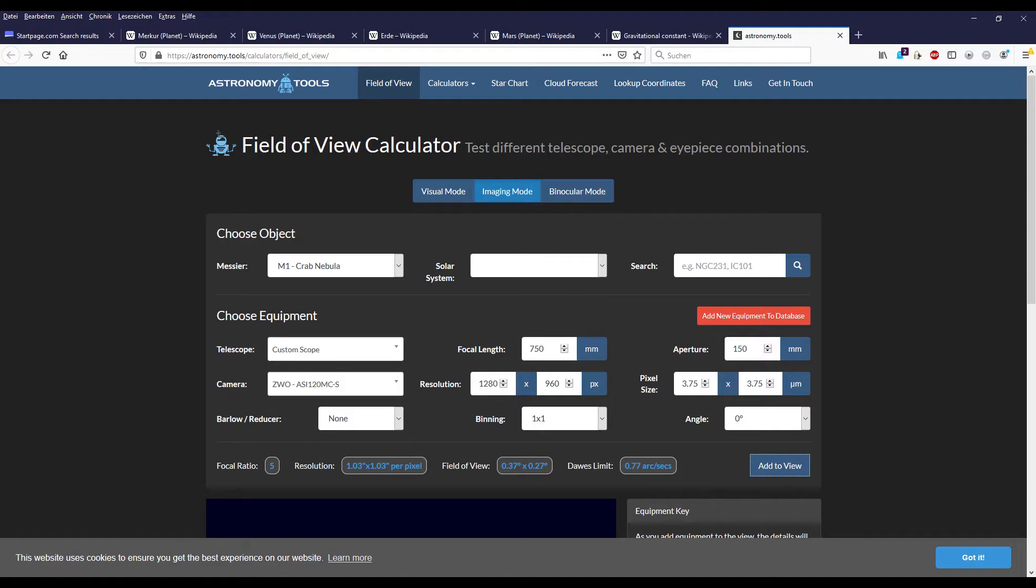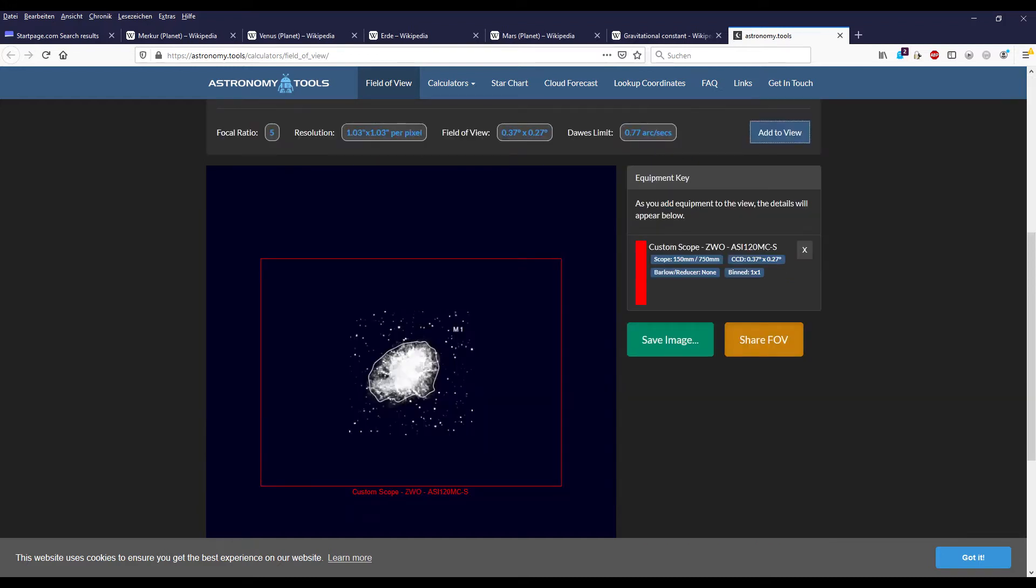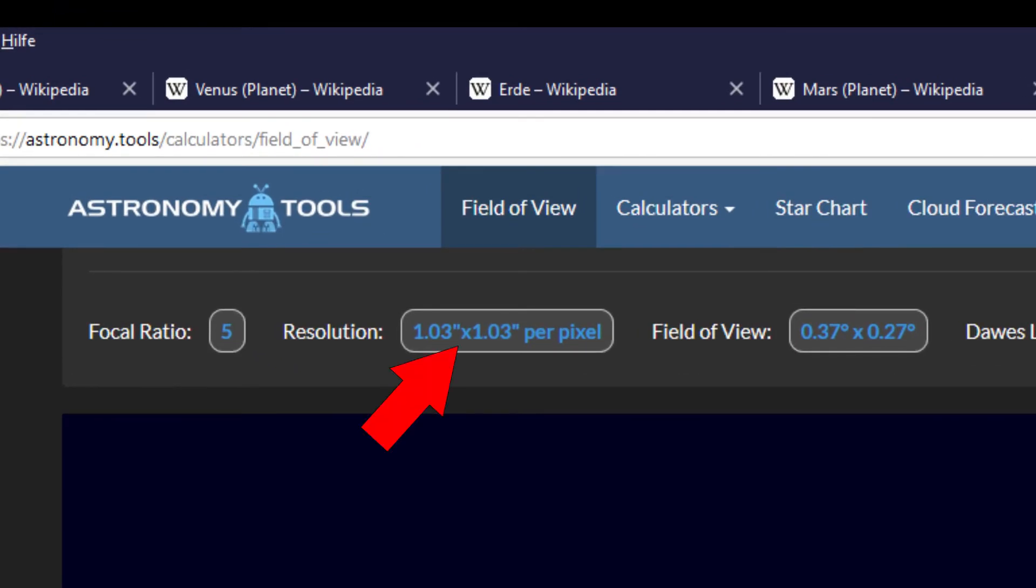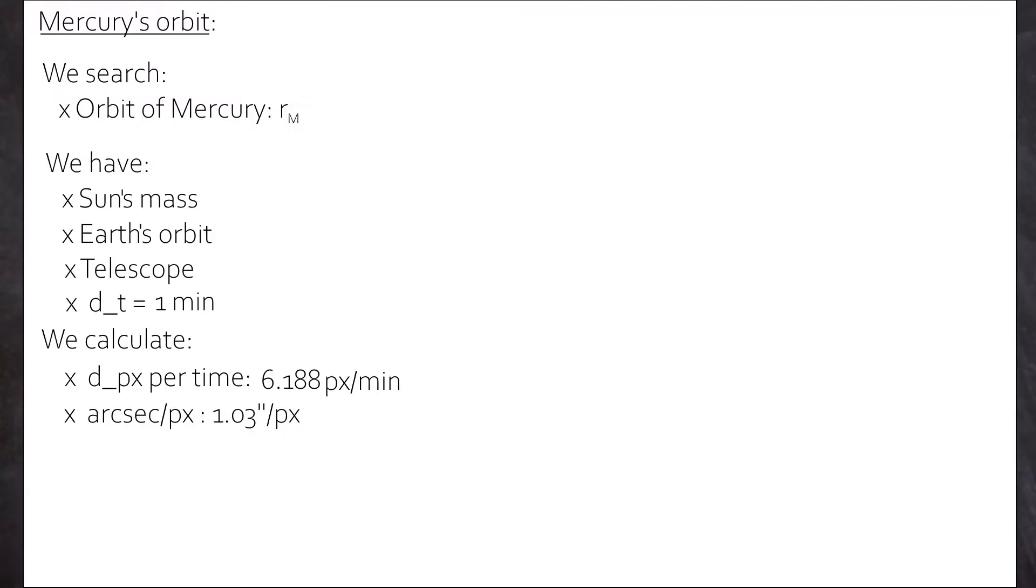Then what? We can calculate something else. We use any field of view calculator online to calculate our field of view. Yeah, but as a bonus, we got the arc seconds per pixel. And that's what we want. In our case, it's 1.03 arc seconds per pixel using my Skywatcher at 750mm focal length and my ZWO ASI 120MC color camera. So 1.03 arc seconds gives us 0.01716 arc minutes per pixel divided by 60. And 60 arc minutes are 1 degree. So we get 0.000277 degree per pixel. And we save that.